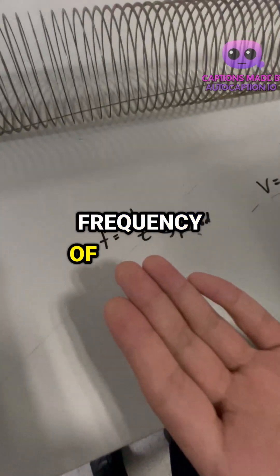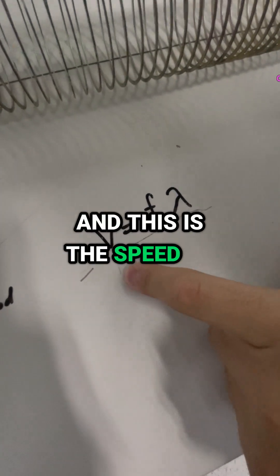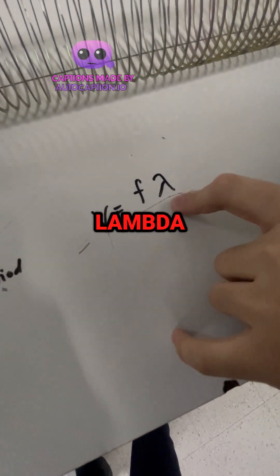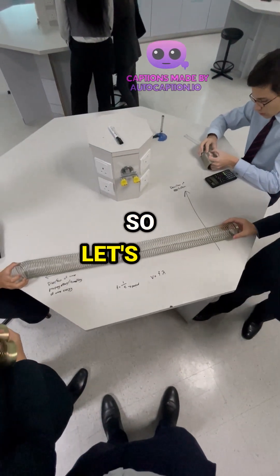Here we have the frequency of the wave equals 1 over time, and this is the speed of the wave equals frequency times lambda, which is the wavelength of the wave. So let's just start simple.